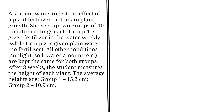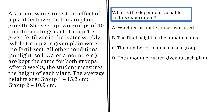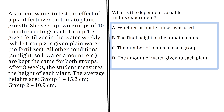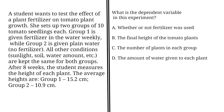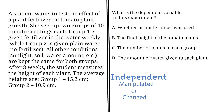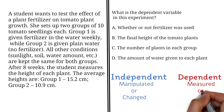Using the same passage, what is the dependent variable in this experiment? The independent variable is the variable that is manipulated or changed in an experiment to see how it affects something else, and the dependent variable is the variable that is measured or observed, and it changes in response to the independent variable.